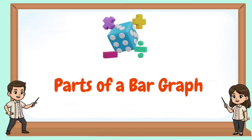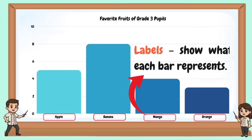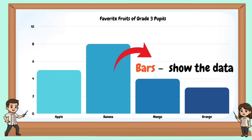Parts of a bar graph: Title — tells what the graph is about. Labels — show what each bar represents. Scale — shows the number value for each line or unit. Bars — show the data.